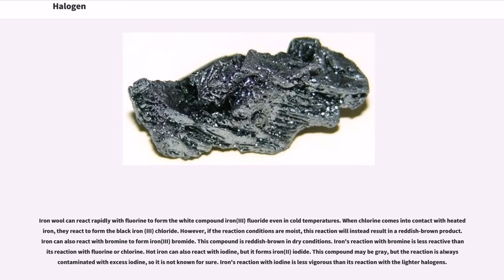Iron wool can react rapidly with fluorine to form the white compound iron(III) fluoride even in cold temperatures. When chlorine comes into contact with heated iron, they react to form the black iron(III) chloride. However, if the reaction conditions are moist, this reaction will instead result in a reddish-brown product. Iron can also react with bromine to form iron(III) bromide, which is reddish-brown in dry conditions. Iron's reaction with bromine is less reactive than its reaction with fluorine or chlorine. Hot iron can also react with iodine, but it forms iron(II) iodide. Iron's reaction with iodine is less vigorous than its reaction with the lighter halogens.